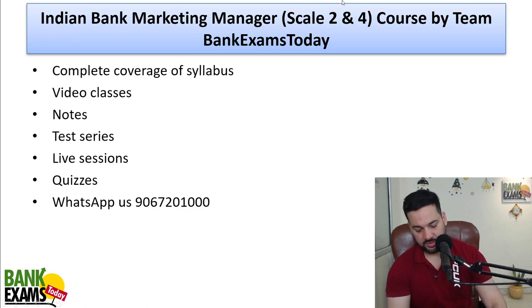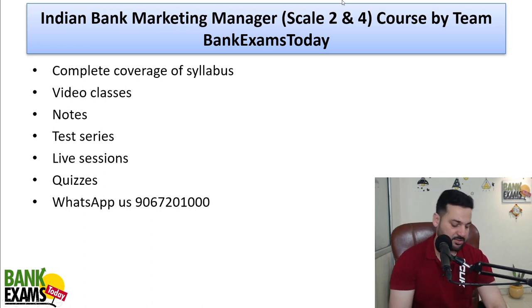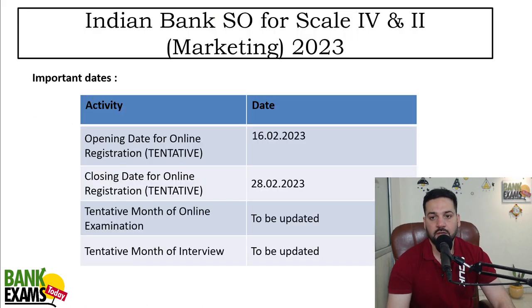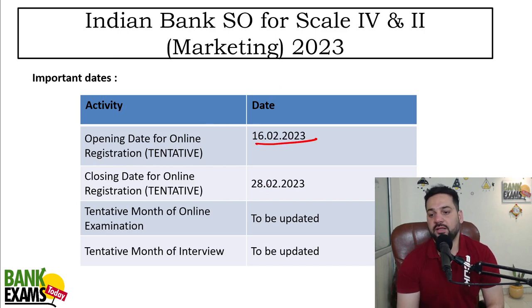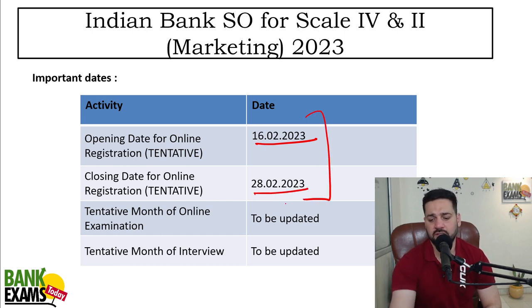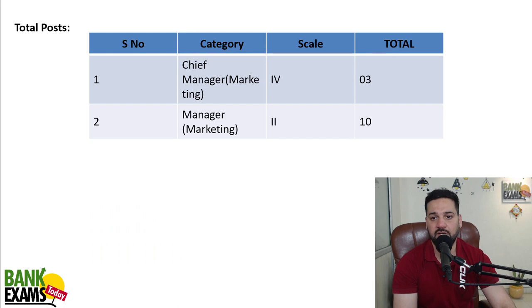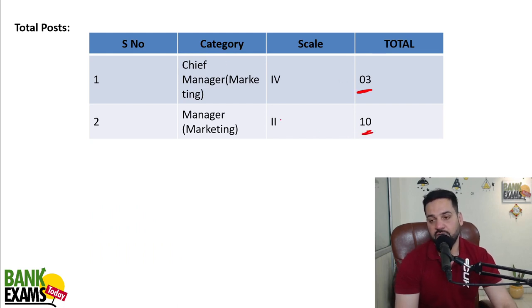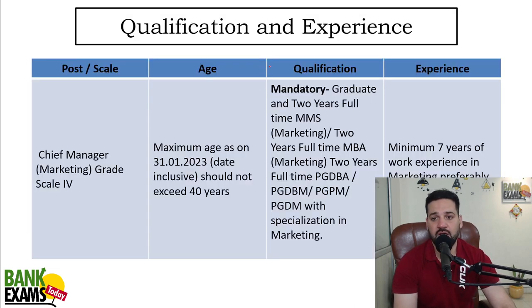You can apply from 16th of February and the last day to apply is 28th of February 2023. Dates have not started yet, but from 16th you can apply for Indian Bank SO Scale 4 and Scale 2. There are three vacancies for Chief Manager and 10 vacancies for Manager Scale 2, so if you are eligible you should definitely apply.